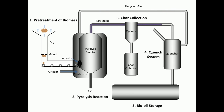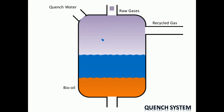The purified gases are then quenched with cold water. After the quench water quickly cools down the gases, the bio-oil condenses and deposits at the bottom. Non-condensable gases are recycled to the combustor in the second step as burning fuel.